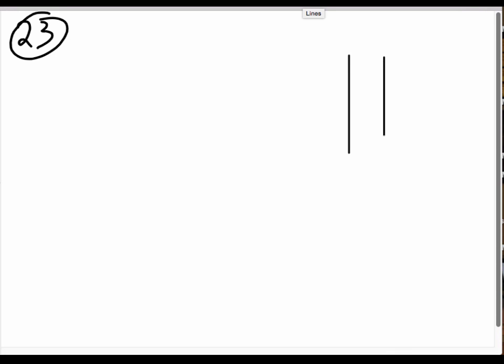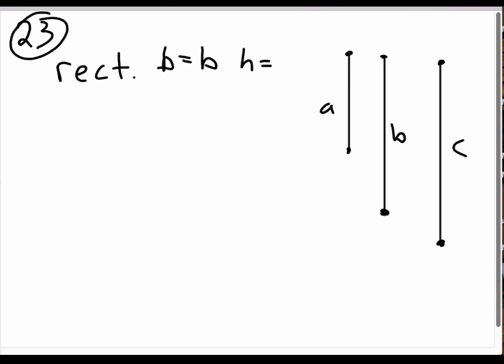We have this line segment, this line segment, and this line segment. This is labeled as A, this is labeled as B, and this is labeled as C. So we have these three line segments and they have lengths. Problem number 23 says construct a right angle with a base B and a height C. So we need a rectangle with the base equals B and the height equals C.